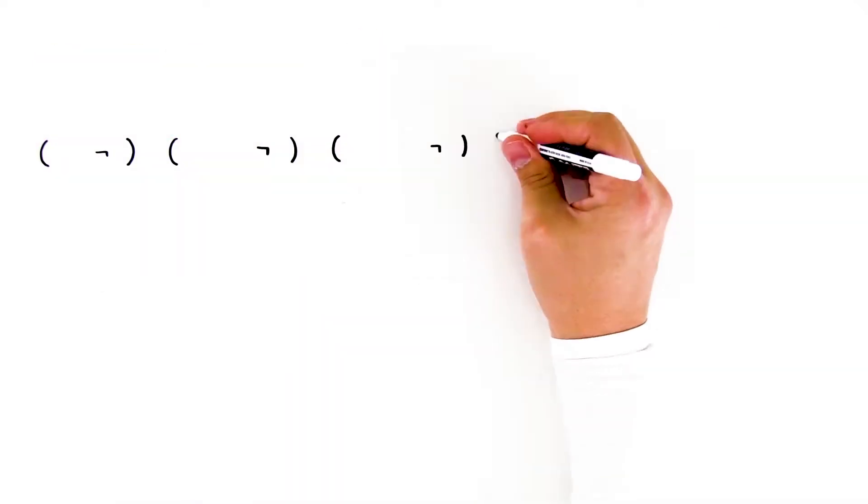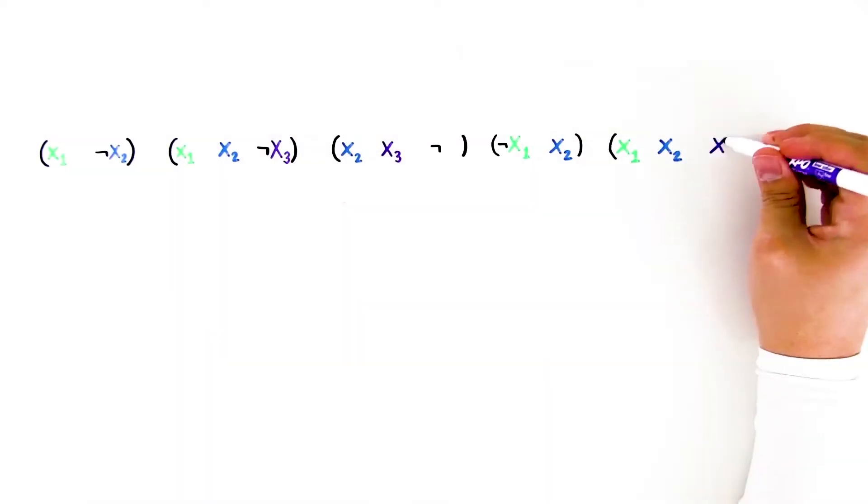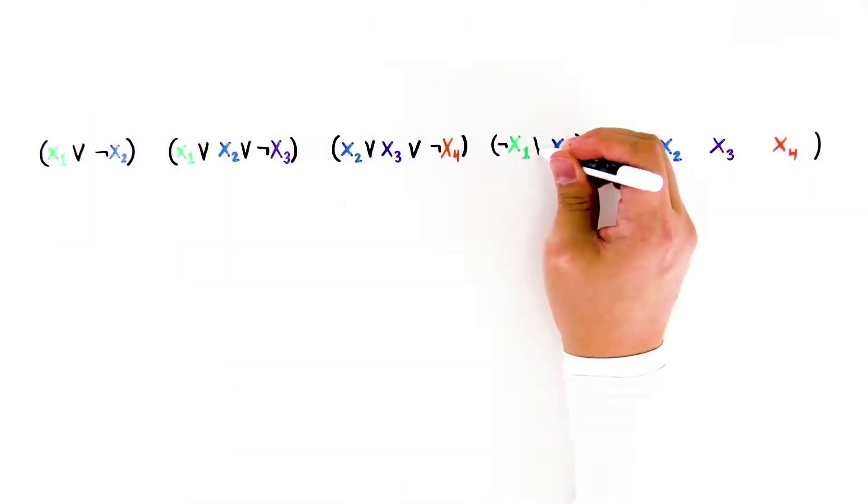Let's start with the mathematical representation of a simple optimization problem with only four variables: x1, x2, x3, and x4. There are six clauses.